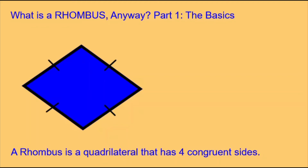Today's Daily Dose of Math is part one in a series about the rhombus. We'll look at the basics of a rhombus. The definition of a rhombus is a quadrilateral that has four congruent sides. In this diagram of a blue rhombus, we can see that there are little lines on each of the four sides, indicating that these four sides are congruent — they are equal in length.